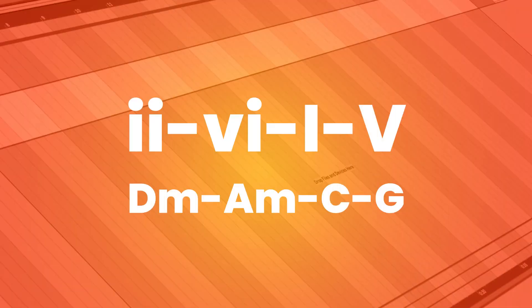How about a progression that sounds super dark? It comes packed with 2 minor chords right in the beginning. It's the 2, 6, 1, 5. In C major, that would result in D minor, A minor, C, G.